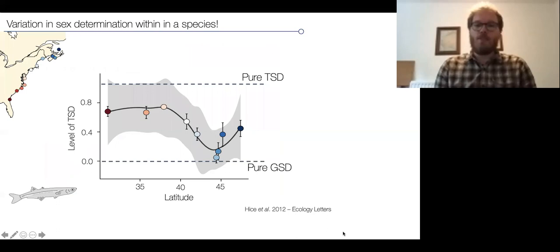There are some systems where we have everything in between. We don't have pure sex determination based on genetics or pure temperature-dependent sex determination, but rather a gradient in between. One of these cases, the only real extreme case I know, are the Atlantic silversides.